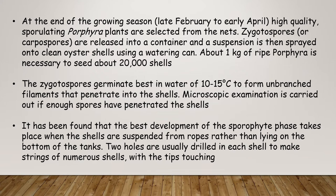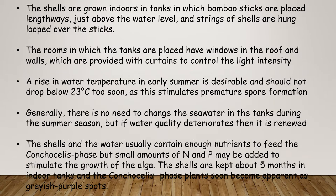Microscopic examination is carried out to confirm that enough spores have penetrated the shells. It has been found that the best development of the sporophyte phase takes place when the shells are suspended from ropes rather than laying on the bottom of the tank. Two holes are usually drilled in each shell to make strings of numerous shells with the tips touching. The shells are grown indoors in tanks in which bamboo sticks are placed lengthwise just above the water level, and the strings of shells are looped over the sticks.